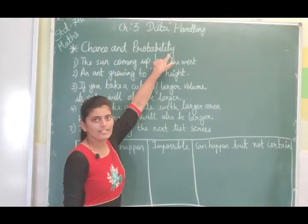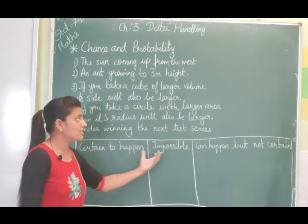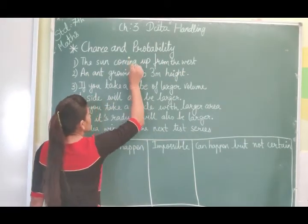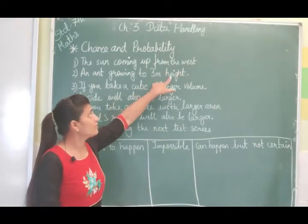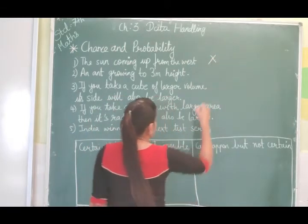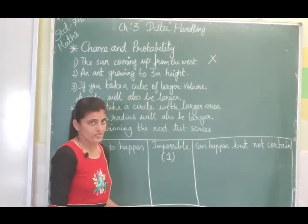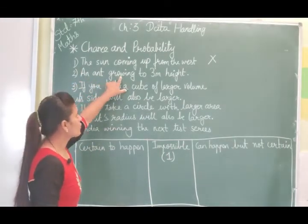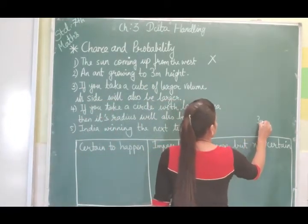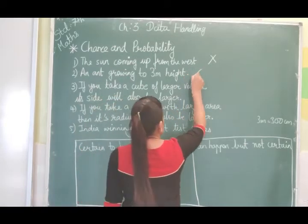Now it is chance and probability. Some examples are given and three categories are given — you have to sort them. First example: the sun coming up from the west. Can the sun come from the west? No, it can never come from the west. So this sentence is impossible. Things that can never be possible are called impossible. Next: an ant growing to 3 meter height. That is also impossible.